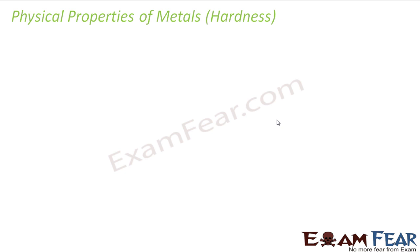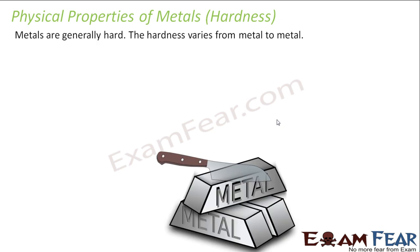If you talk about hardness, most of the metals are hard. For example, sodium is not hard — you can cut it with a knife. But most of the metals you can't cut with a knife. You take gold, silver, iron, copper — it is difficult to cut them with a knife. That's why metals are generally hard, though it is not a fixed rule. Most of the metals are hard, and the hardness varies from metal to metal.